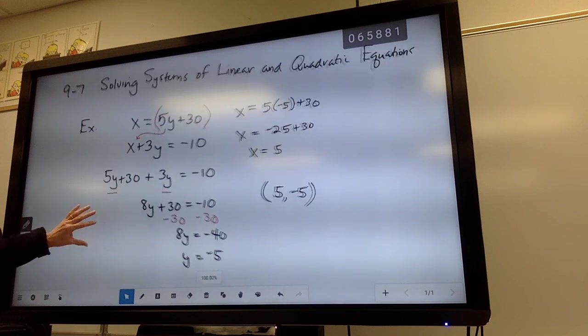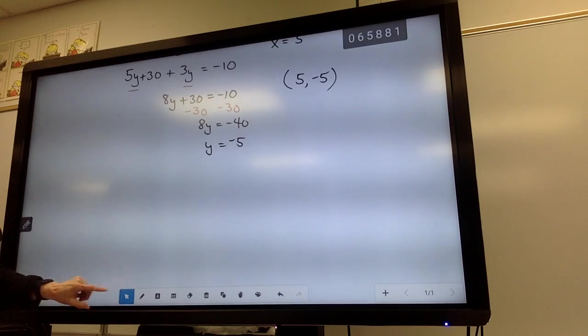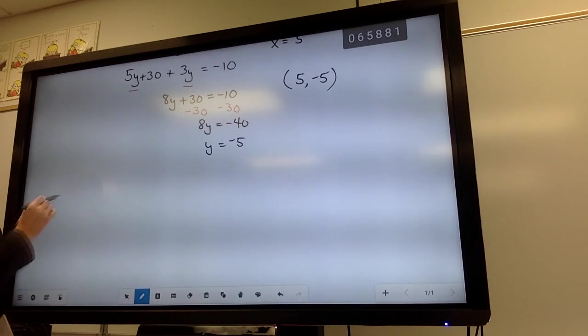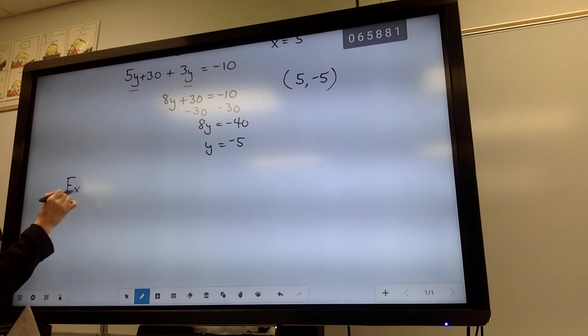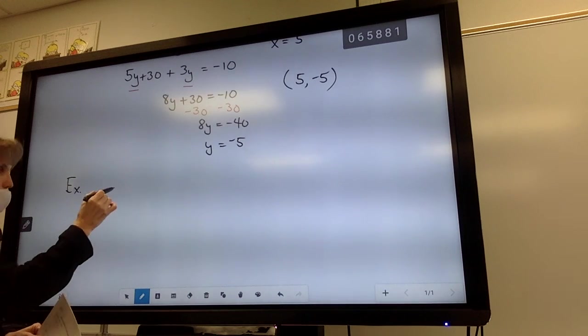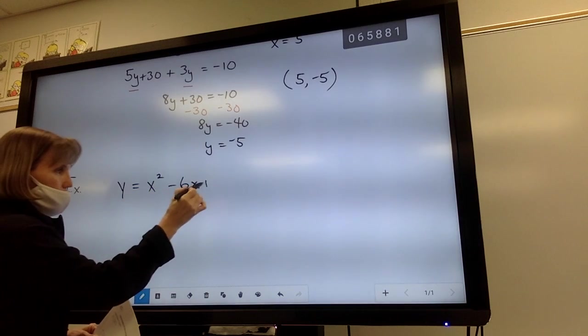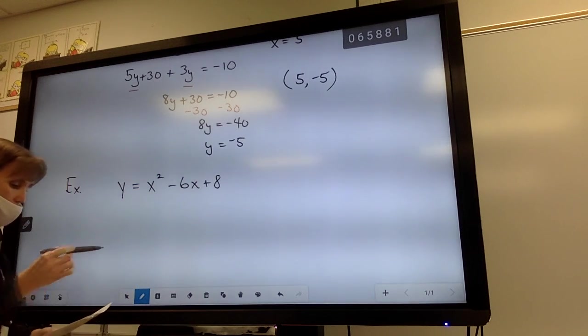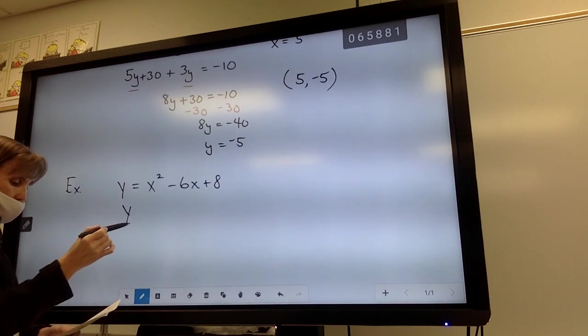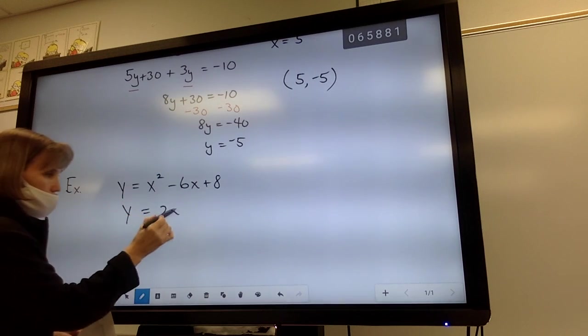Well, we're going to do the same thing with systems of linear and quadratic equations. You're going to get a mixture. So for example, if I had y equals x squared minus 6x plus 8, and my other equation in the system is y equals 2x minus 4.